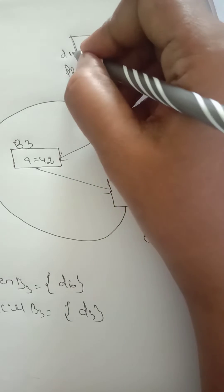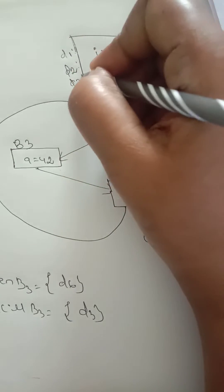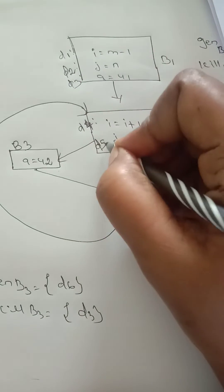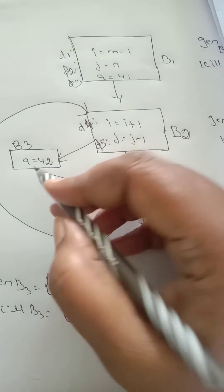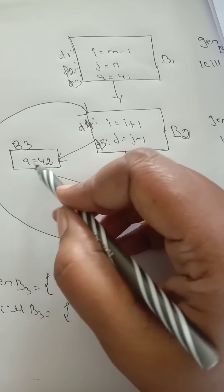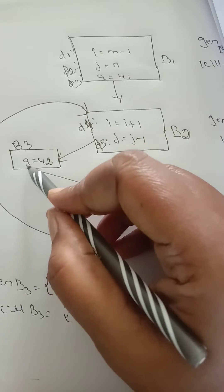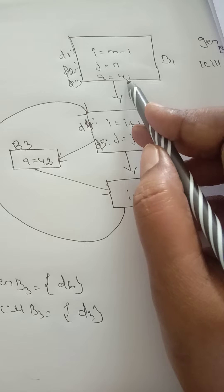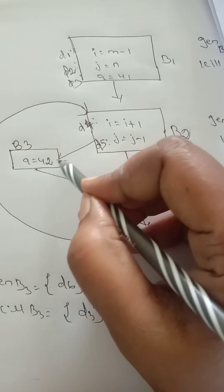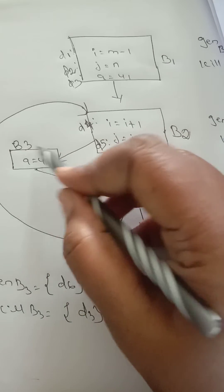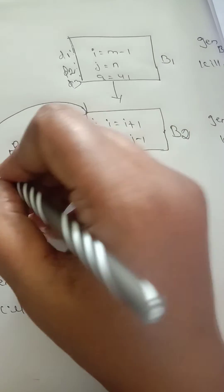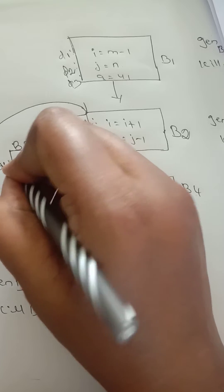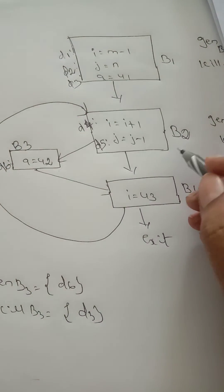Next in block two, j equal to j minus one — we are decrementing j, and j was previously j equal to n (D2). Since the output variable is changed, this is called data five (D5). In block three, a equal to u2 — previously a equal to u1, now we are changing a equal to u2, so it is a different data called D6.